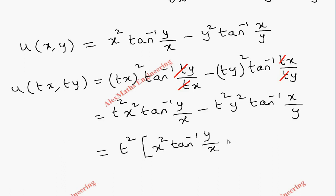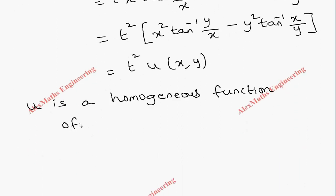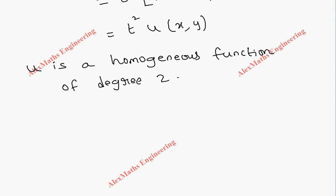After taking t squared common, we're left with x squared times tan inverse y by x minus y squared times tan inverse x by y. So finally we got t squared times u of x comma y. From this it is clear that u is a homogeneous function of degree 2.